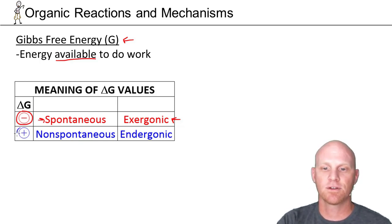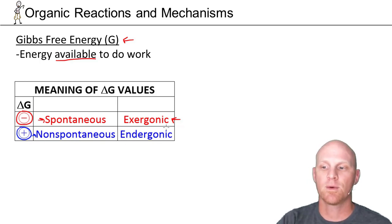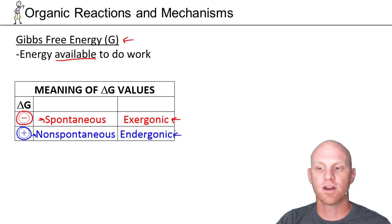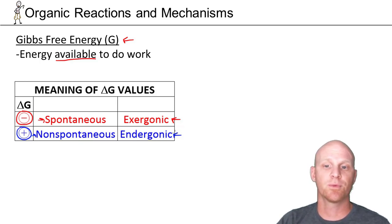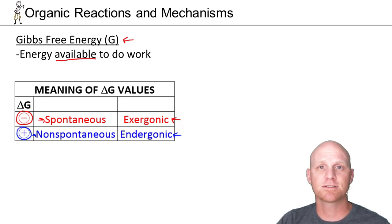On the other hand, if delta G is positive, that reaction is not spontaneous in the forward direction — it turns out to be spontaneous in the reverse direction, but not forward. We refer to that as being endergonic. By just looking at the sign of delta G, you know whether a reaction is spontaneous or non-spontaneous.